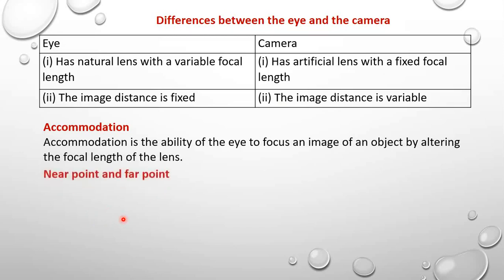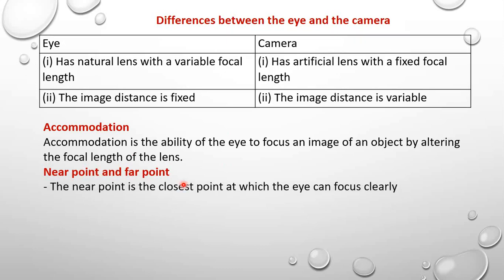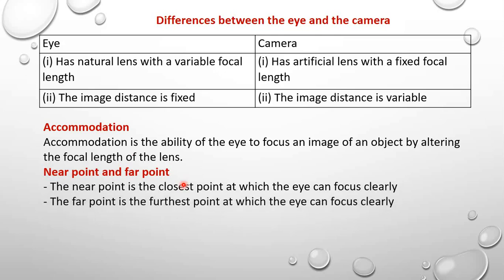Let us also define what we call the near point and the far point. The near point is the closest point at which the eye can focus clearly. The far point is the furthest point at which the eye can focus clearly. We need to note that for a normal human eye, the near point is 25 cm and the far point is at infinity.